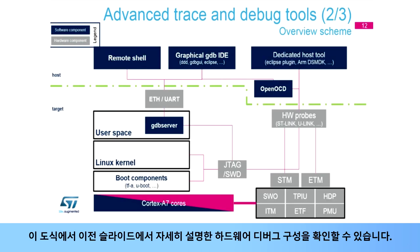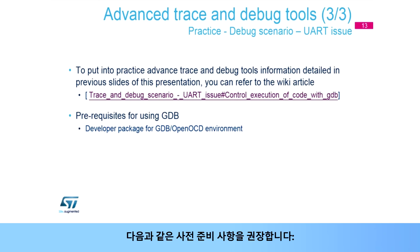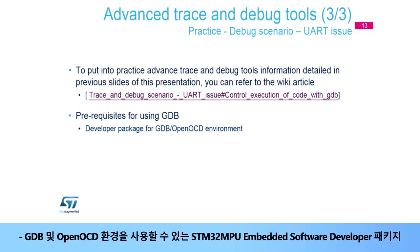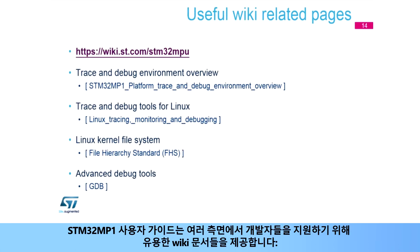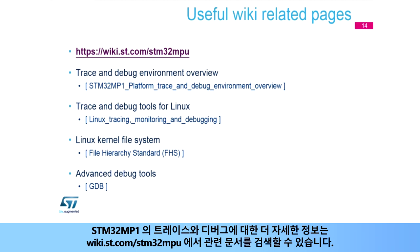Here you can find a representation of the hardware debug configurations detailed in the previous slide. To put advanced trace and debug tools into practice, you can refer to the wiki article: Trace and Debug Scenario, UART Control Execution of Code with GDB. The prerequisite recommended is the STM32 MPU Embedded Software Developer Package, available for GDB and OpenOCD environment. The STM32MP1 user guide provides useful wiki articles to support developers. To go further on trace and debug solutions for STM32MP1, go to wiki.st.com/STM32MPU and search for the articles listed in this presentation. Thank you.